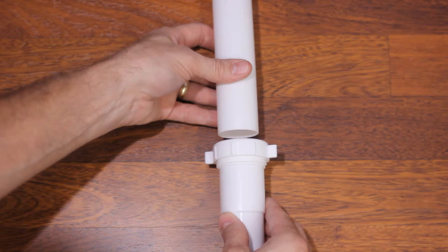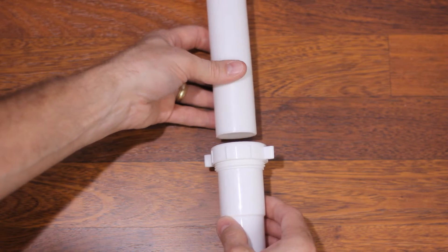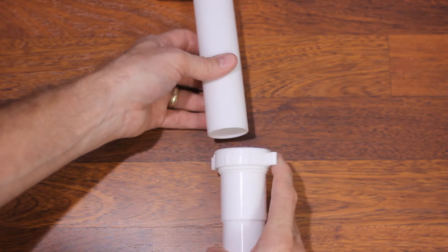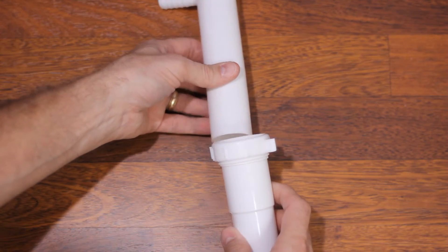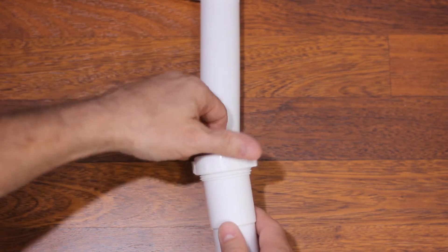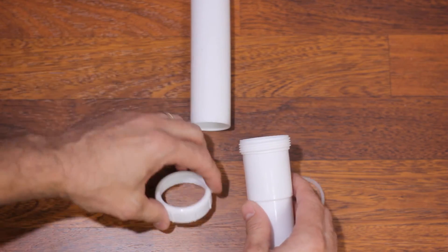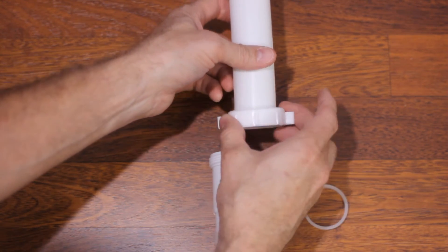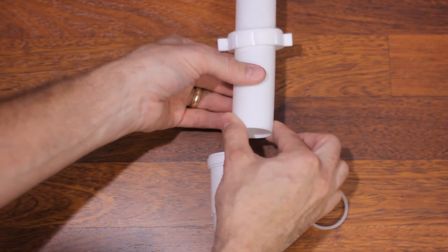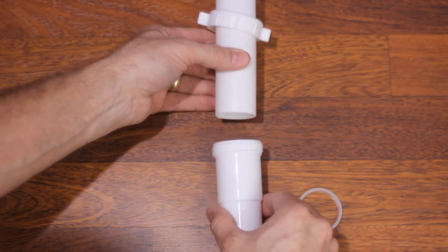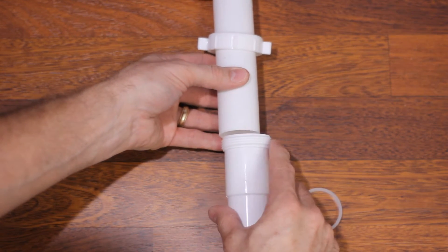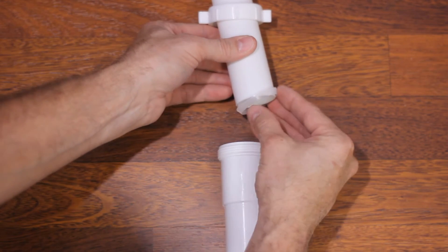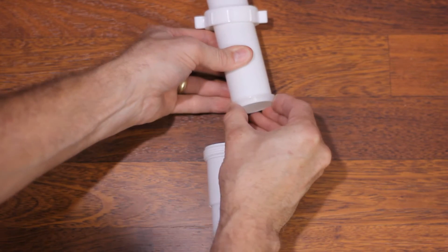You can't just loosen this up and then try to shove it in there, because there's a gasket in there. What you need to do is unscrew this. Make sure this is slid up onto the pipe that's going into the one with the threads.